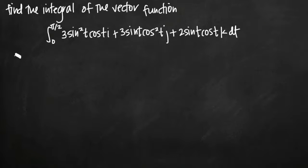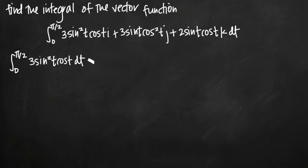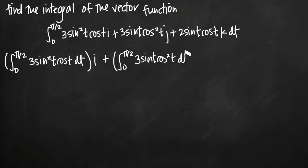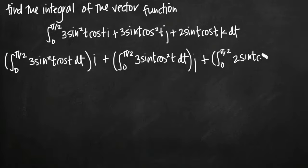If we rewrite this, we say the integral from 0 to pi over 2 of 3 sine squared t cosine t dt, multiplied by i. Then plus the integral from 0 to pi over 2 of 3 sine t cosine squared t dt, multiplied by j. Then we add the integral from 0 to pi over 2 of 2 sine t cosine t dt, multiplied by k.